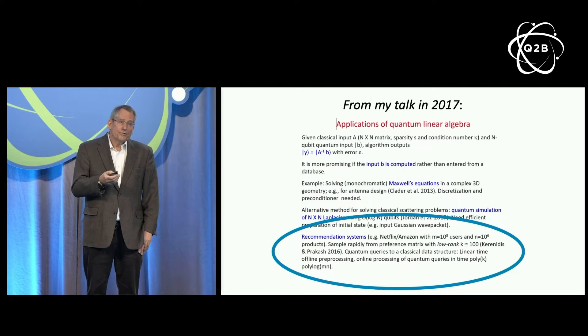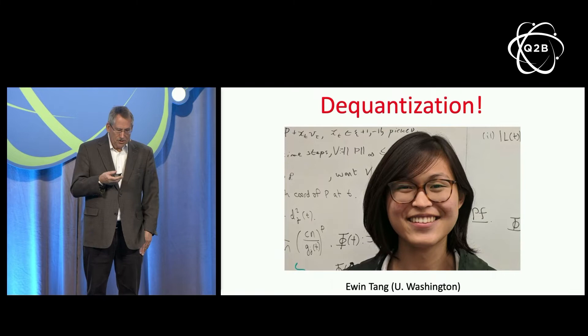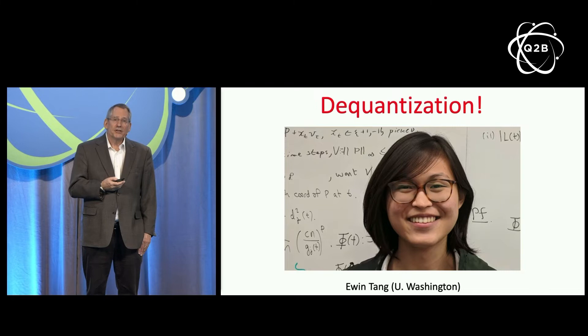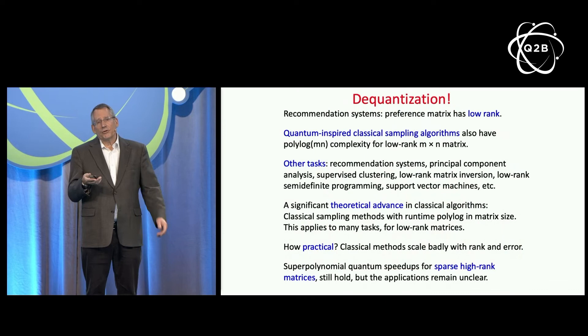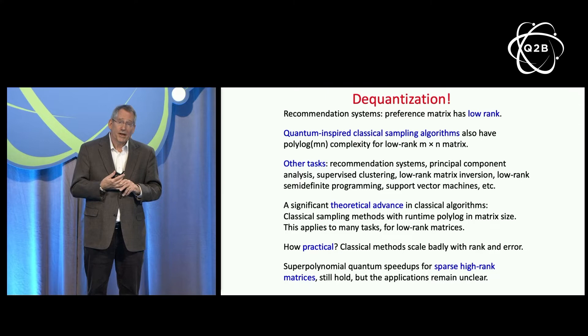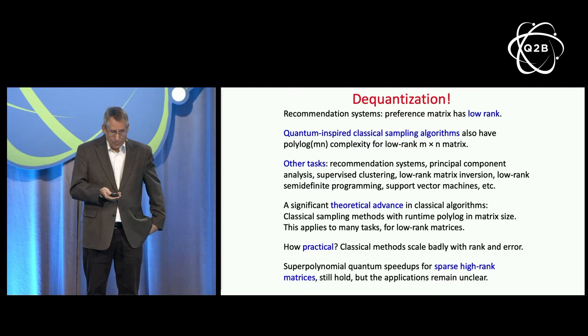But just a few months after I gave that talk, an amazing student then at the University of Texas, Ewin Tang, made a remarkable discovery. She found that quantum-inspired classical algorithms can achieve a similar result for the recommendation systems problem. It's intrinsic to the problem that the preference matrix is low rank, and that can be exploited in classical sampling algorithms, Ewin pointed out, to make a high-value recommendation again in time that is just polylogarithmic in the size of the matrix. This gave rise to a flood of other dequantization results for proposed quantum algorithm applications across various tasks.